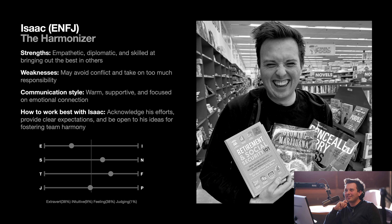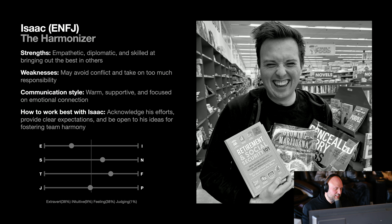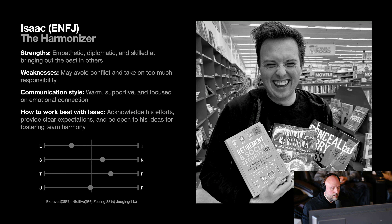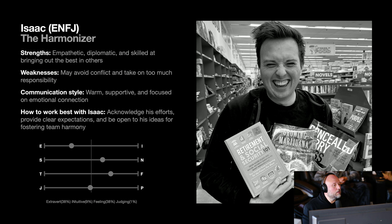The E on the far left doesn't surprise me or any of you guys. Alright, let's look at Isaac. So Isaac's the harmonizer — his strengths include being empathetic, diplomatic, and skilled at bringing out the best in others. Weaknesses: may avoid conflict and take on too much responsibility. Communication style: warm, supportive, and focused on emotional connection. How to work best with Isaac: acknowledge his efforts, provide clear expectations, and be open to his ideas for fostering team harmony. Isaac gets 38% in both extrovertness and feeling, 9% on intuitive, and 1% on judging — so he's just barely a J.